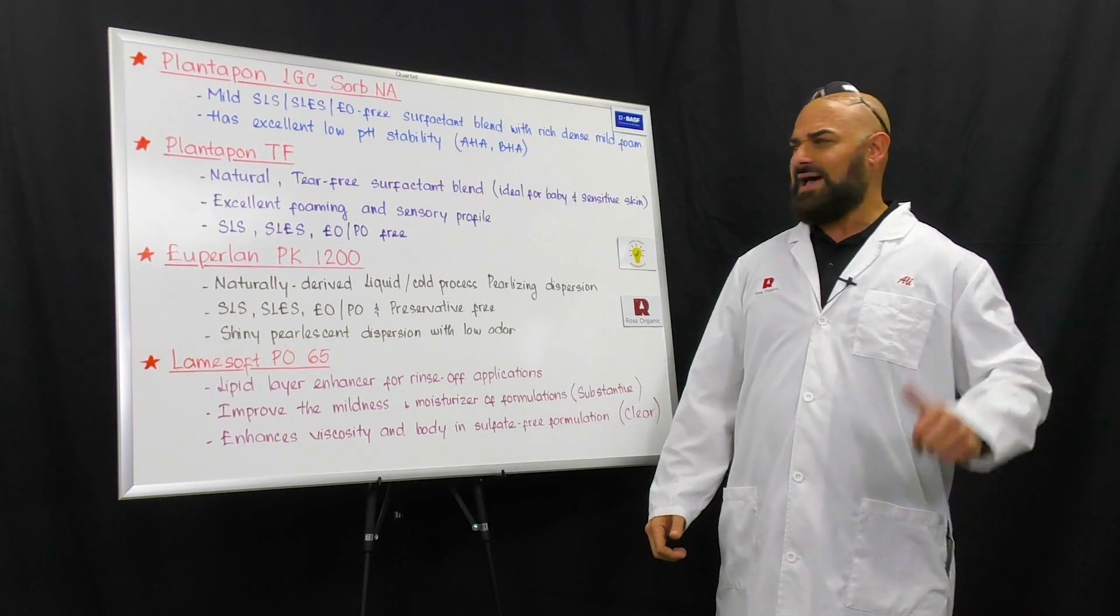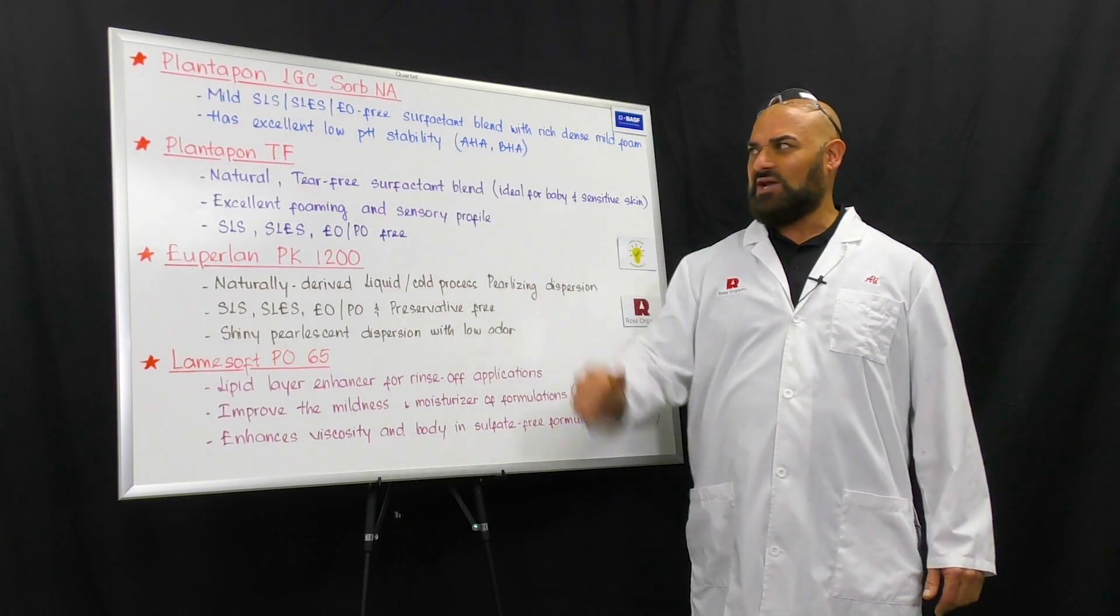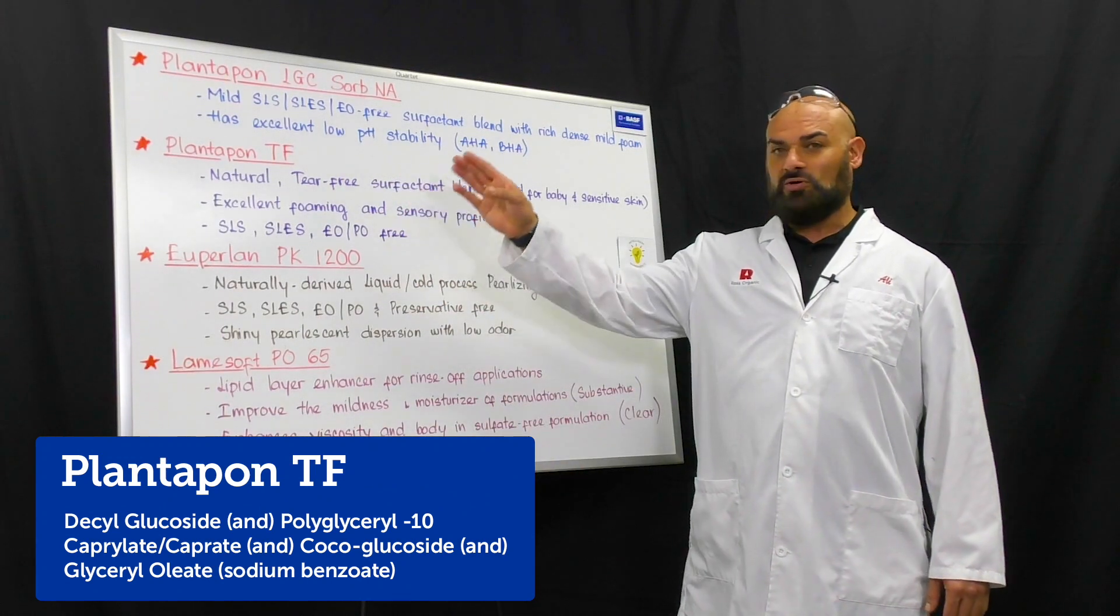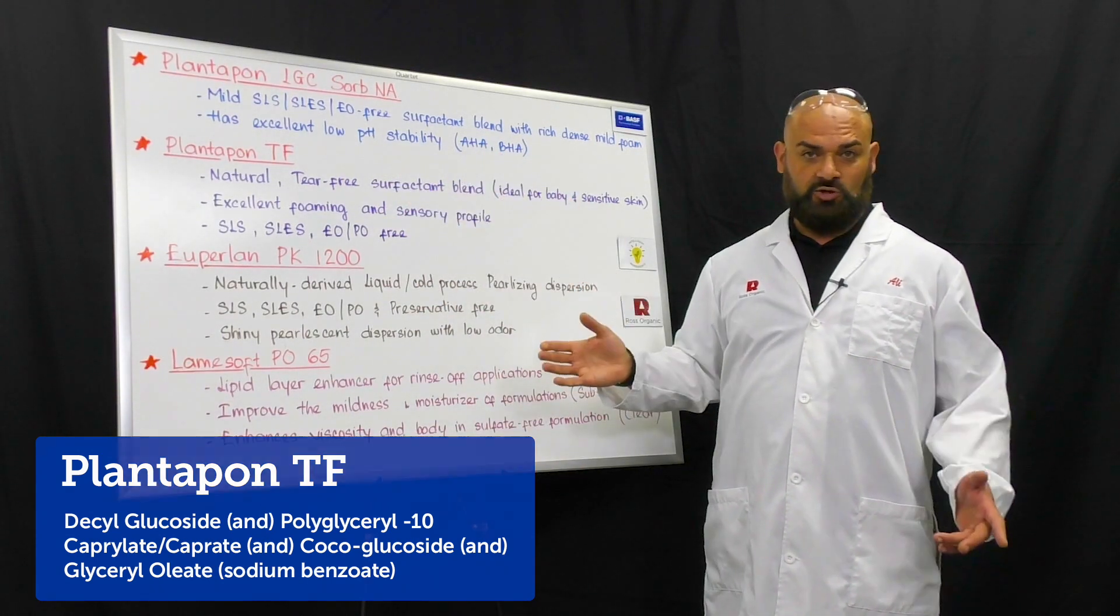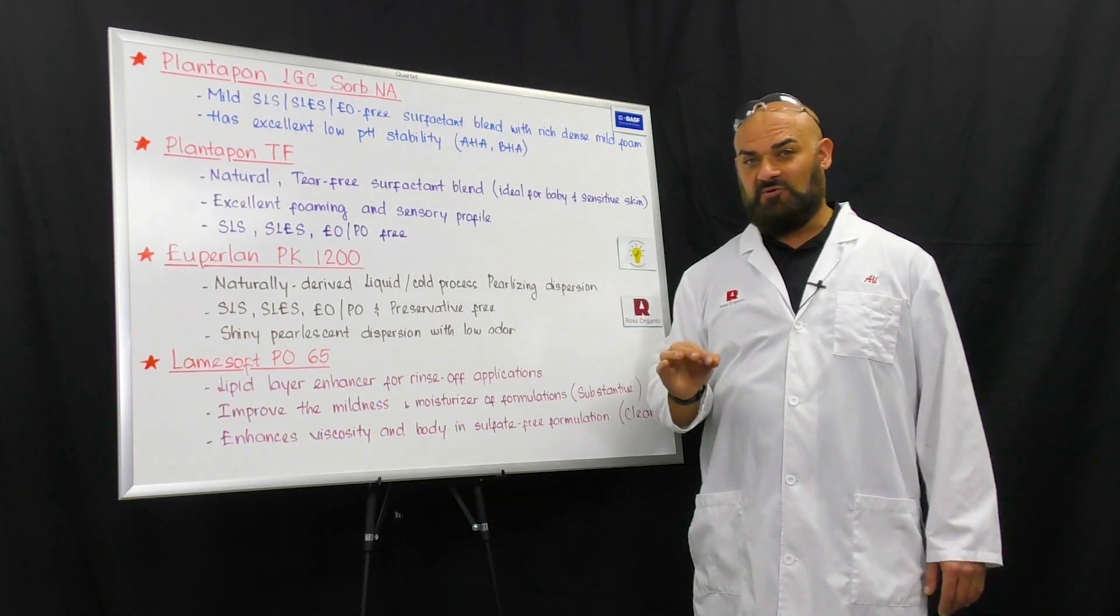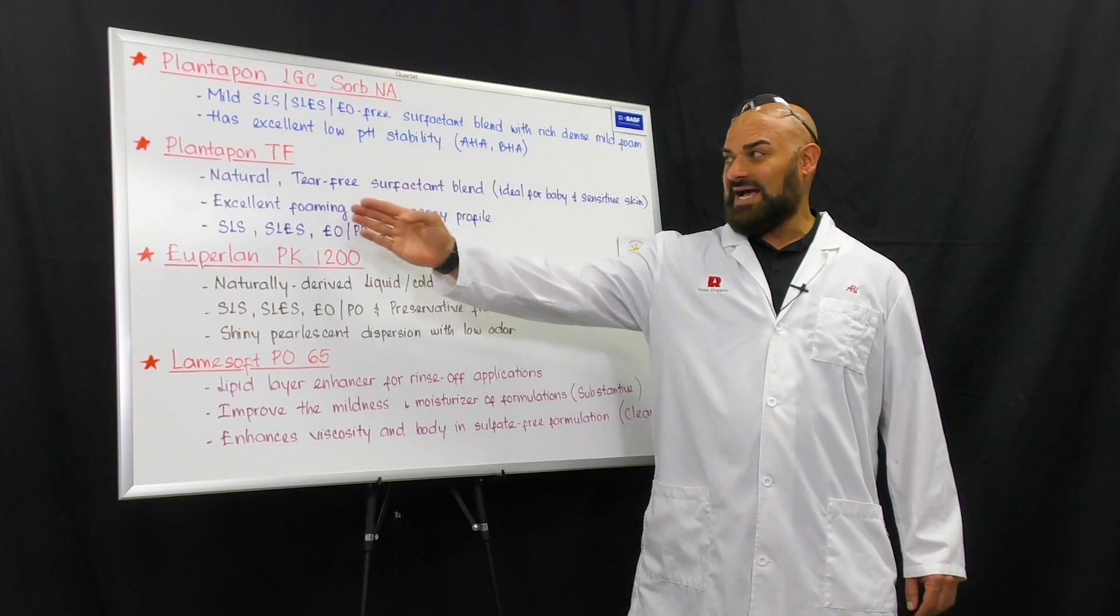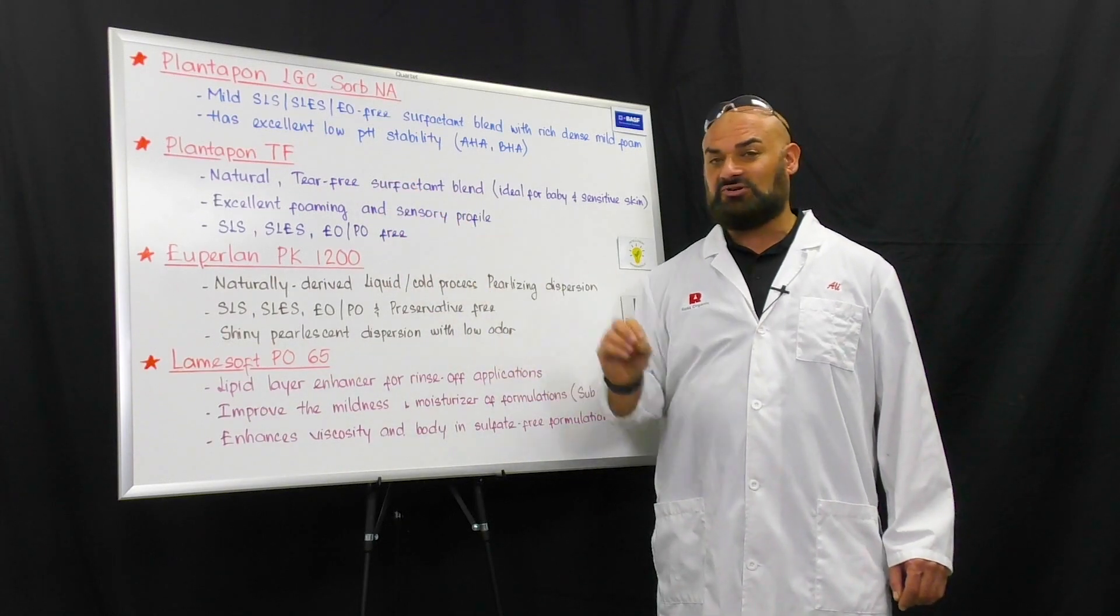beta hydroxy systems like acne formulations. The second one is the PlantUpon TF, tear-free. This is a natural tear-free surfactant blend when diluted with water. This is ideal for baby formulations and sensitive skin formulations. This has excellent foaming and sensory profile and also it is sulfate-free and ethoxylate-free blend.